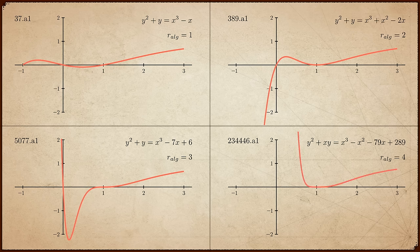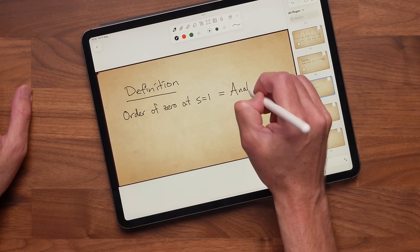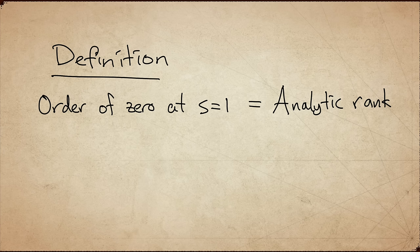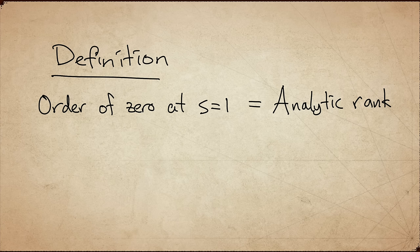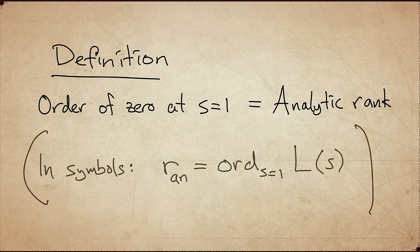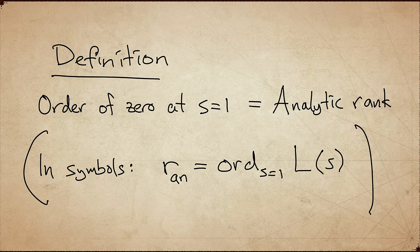Definition. The order of the L function at s equals 1 is called the analytic rank. In symbols, r a n, for analytic, is the order at s equals 1 of the L function L of s.